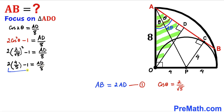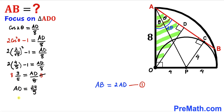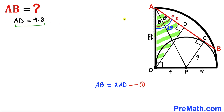Simplifying the left-hand side: 8/5 − 1 = 3/5. So 3/5 = AD / 8. Multiplying both sides by 8 to isolate AD, the 8s cancel and our AD length turns out to be 24/5, which equals 4.8 units.